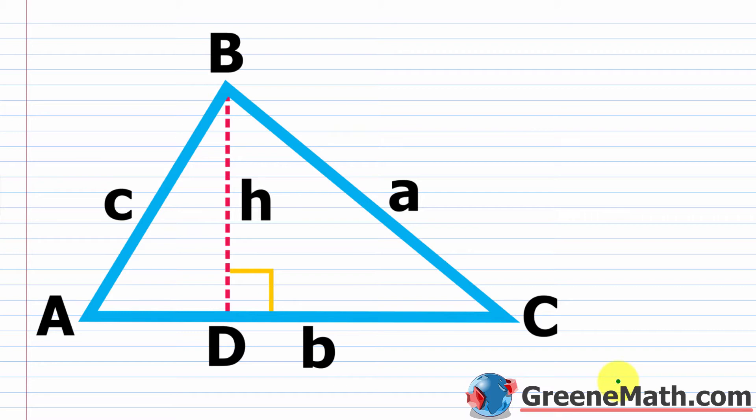When we talk about solving triangles, earlier in the course we solved right triangles with SOHCAHTOA — this just means we're finding all the missing sides and all the missing angles. Now when we work with an oblique triangle, which is a non-right triangle, we have to use something like the law of sines or the law of cosines because we don't have a right triangle.